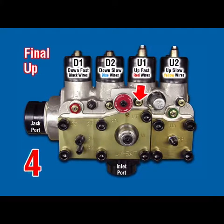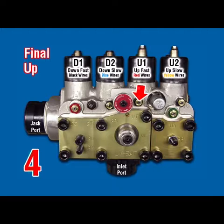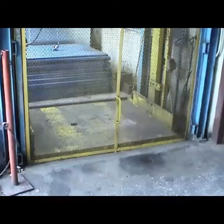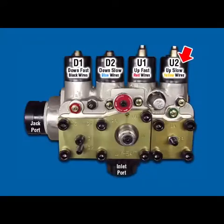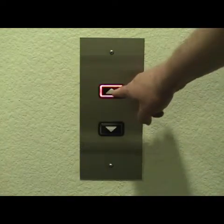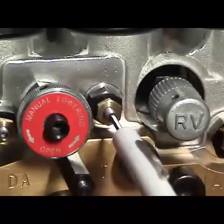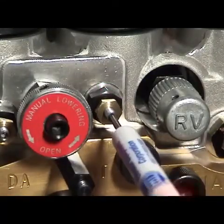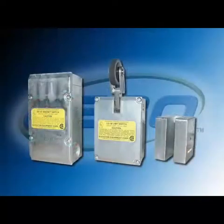UT Up Transition. The following procedure helps in cutting through the ineffective zone of the up transition adjuster, therefore expediting the final setting of UT. Car at lower floor with no load. Register an up call with U2 energized — car will move up at leveling speed. Turn UT clockwise until car speeds up, then slowly counterclockwise until car slows down again. Reconnect U1. Register an up call and observe up transition. Turn UT clockwise for slower transition and counterclockwise for faster transition until up transition is satisfactory.